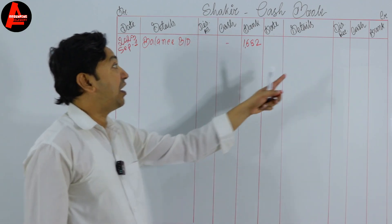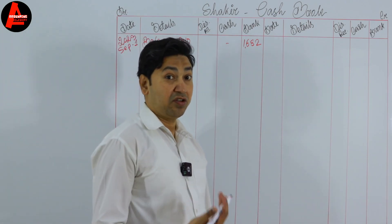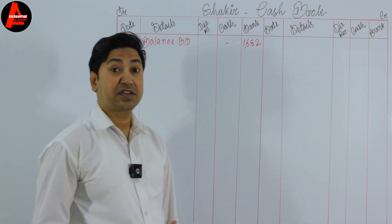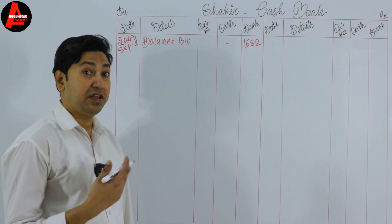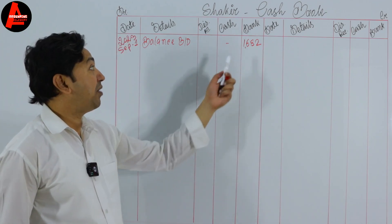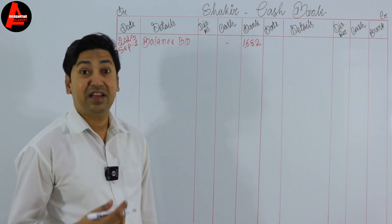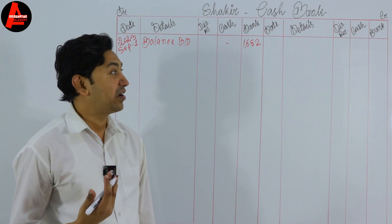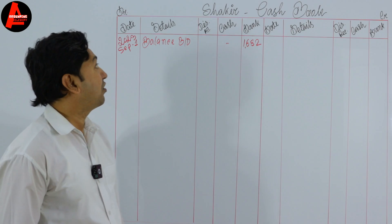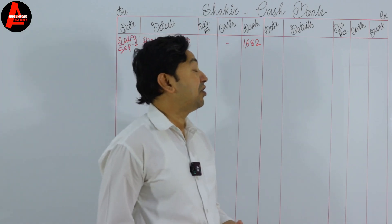The discount allowed and discount received columns have no opening balance — these are nominal accounts. Discount allowed is an expense and discount received is an income; they appear in the income statement. Cash and bank are assets. Sometimes we have a bank balance on the credit side — that is when it is a bank overdraft. In that case we write the opening balance on the credit side. So in another question if you get an overdraft, write it on the credit column.